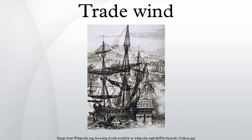The trade winds are the prevailing pattern of easterly surface winds found in the tropics, within the lower portion of the Earth's atmosphere, in the lower section of the troposphere near the Earth's equator. The trade winds blow predominantly from the northeast in the northern hemisphere and from the southeast in the southern hemisphere, strengthening during the winter and when the Arctic oscillation is in its warm phase.